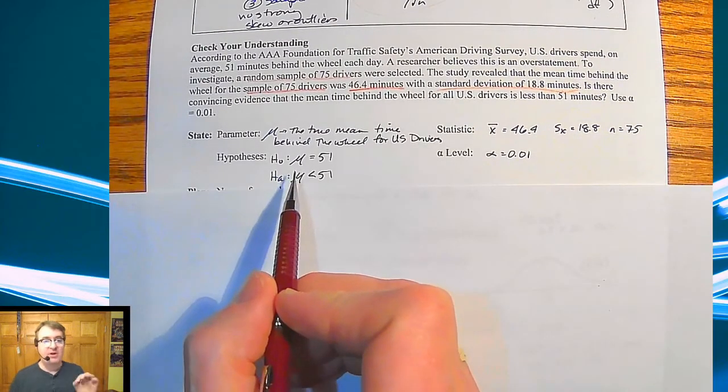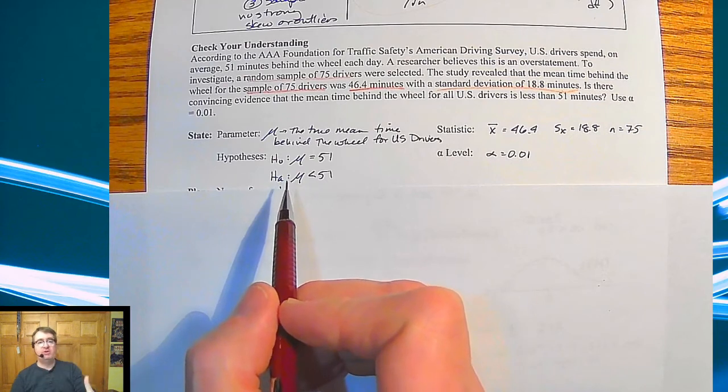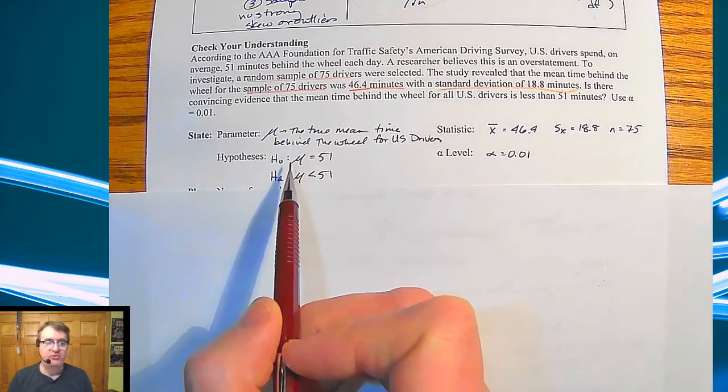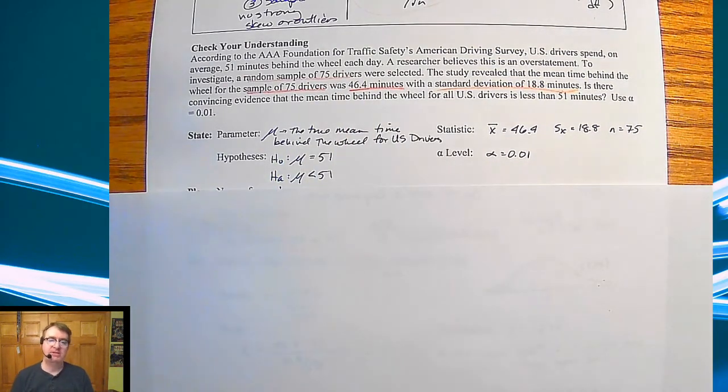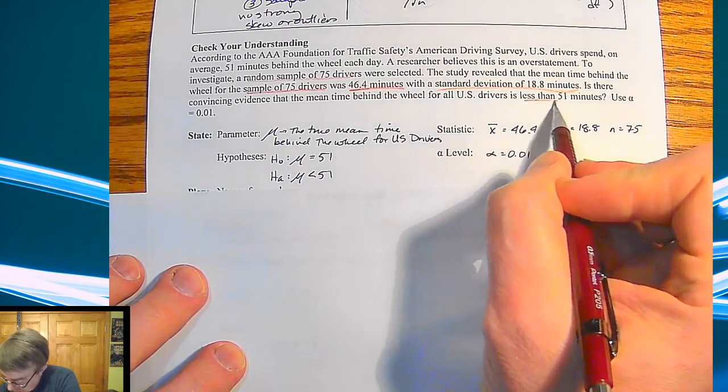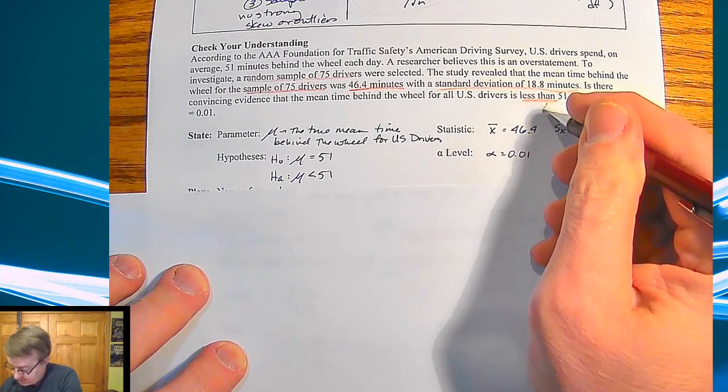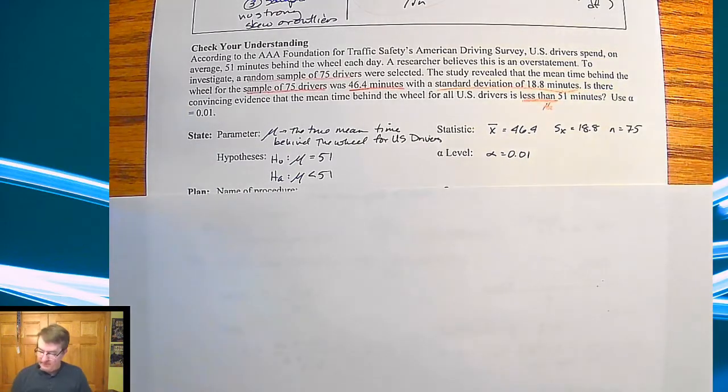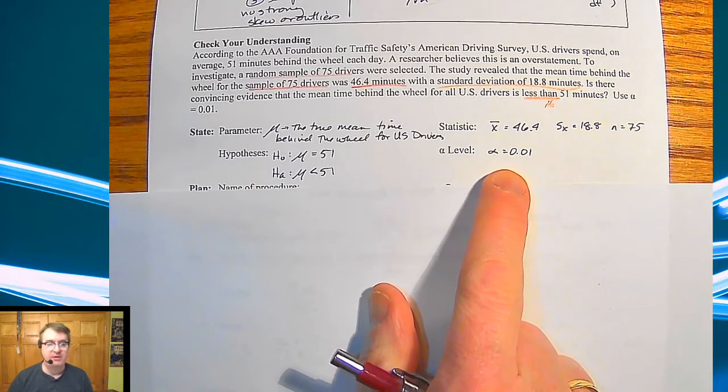Hypothesis. So the hypothesis, the null hypothesis, nothing's changing. We're assuming what is stated is true, that the null hypothesis, that the mean is actually 51 minutes. The alternative hypothesis we state is going to be less than 51 minutes. So that is our alternative hypothesis there. And our alpha level is 1% because they told us that.